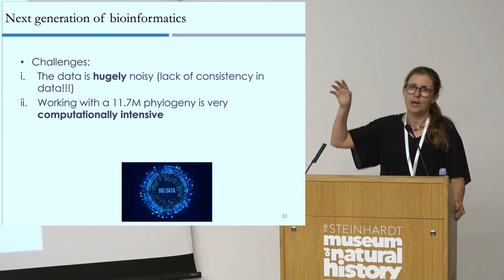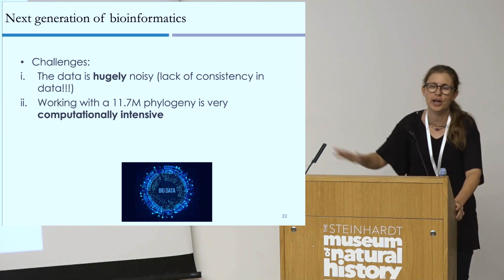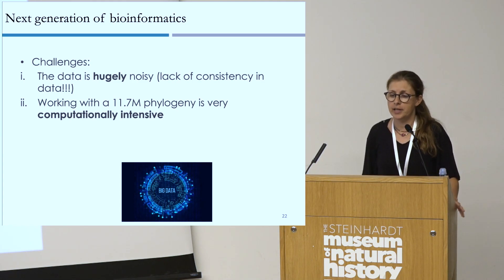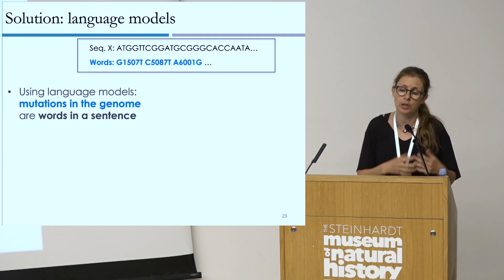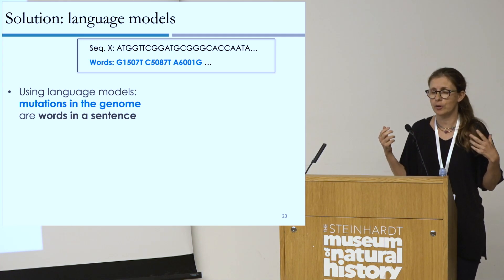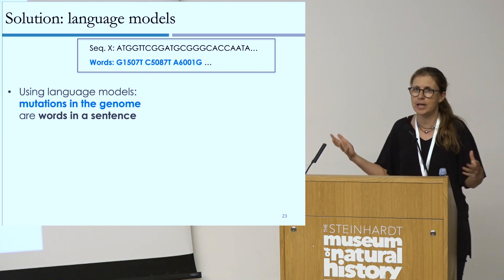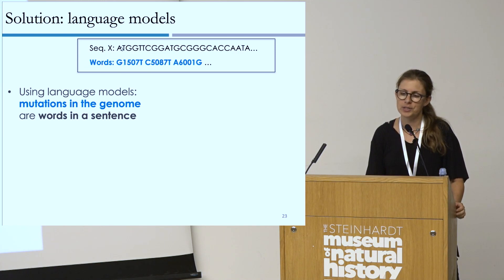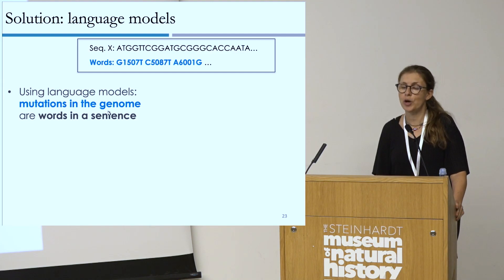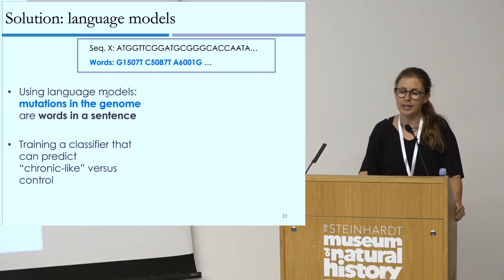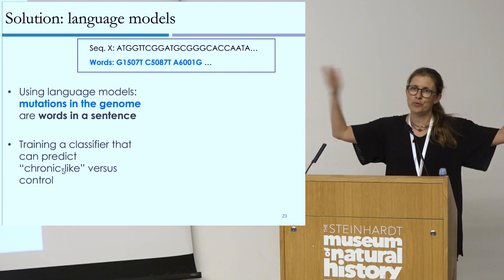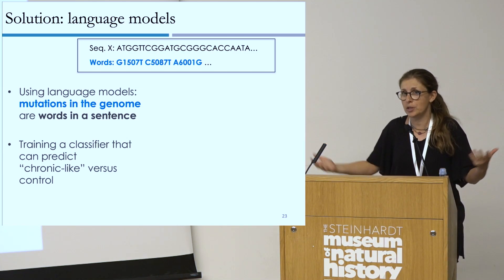Our solution was to resort to language models — which are now very famous because ChatGPT uses them. Basically, we model each sequence as a sentence, and the mutations in the genome relative to a reference are the words in the sentence. We then train a model and ask it to learn this language. We want to train a classifier that can predict which sentences are derived from chronic-like infection and which from normal transmission chains.